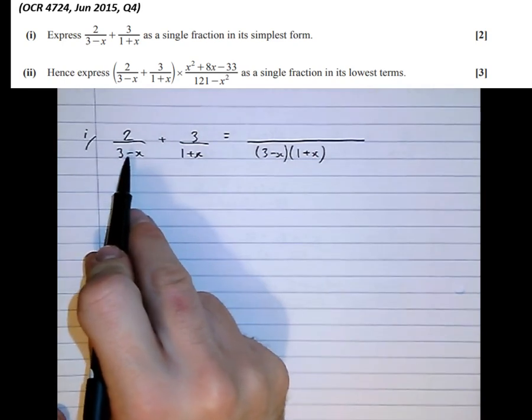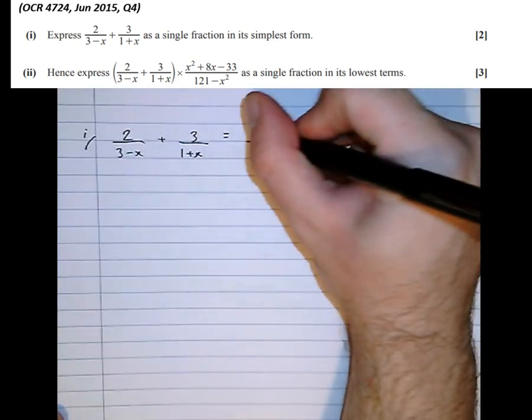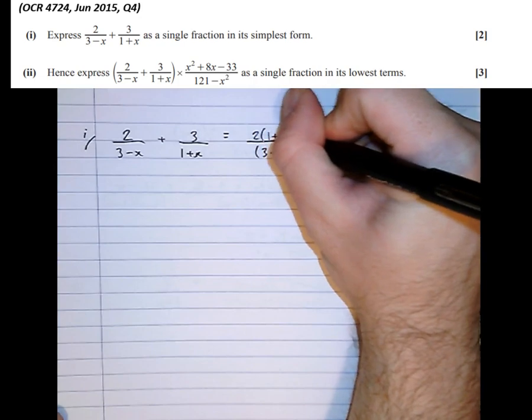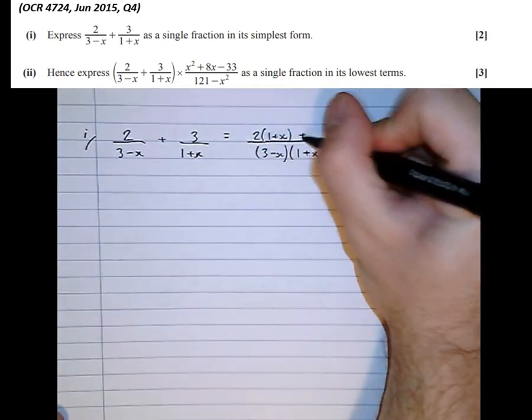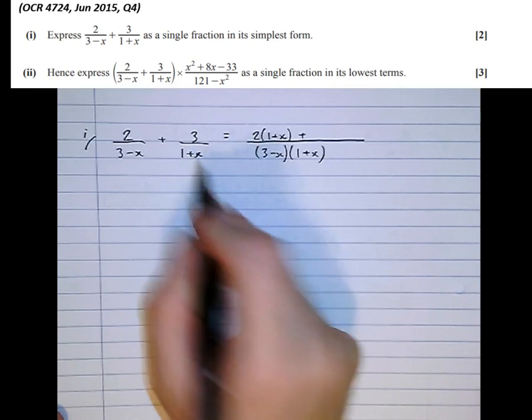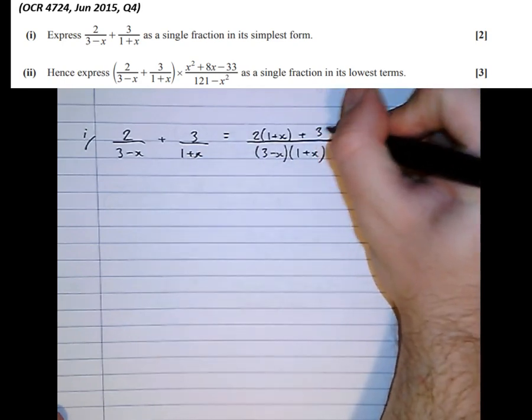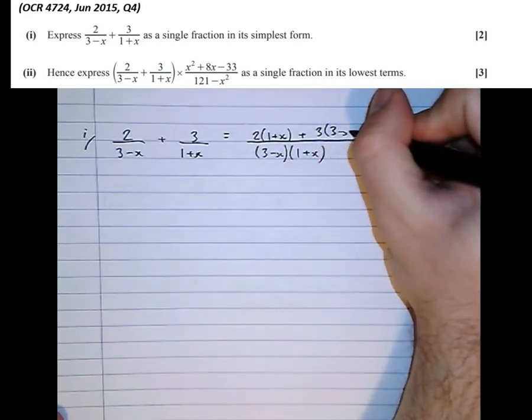So what we need to do now, we'll multiply this by 1 plus x. So we're going to multiply the top by 1 plus x as well. Then there's a plus sign. We multiply this side by 3 minus x. So that's exactly what we're going to do to the top.